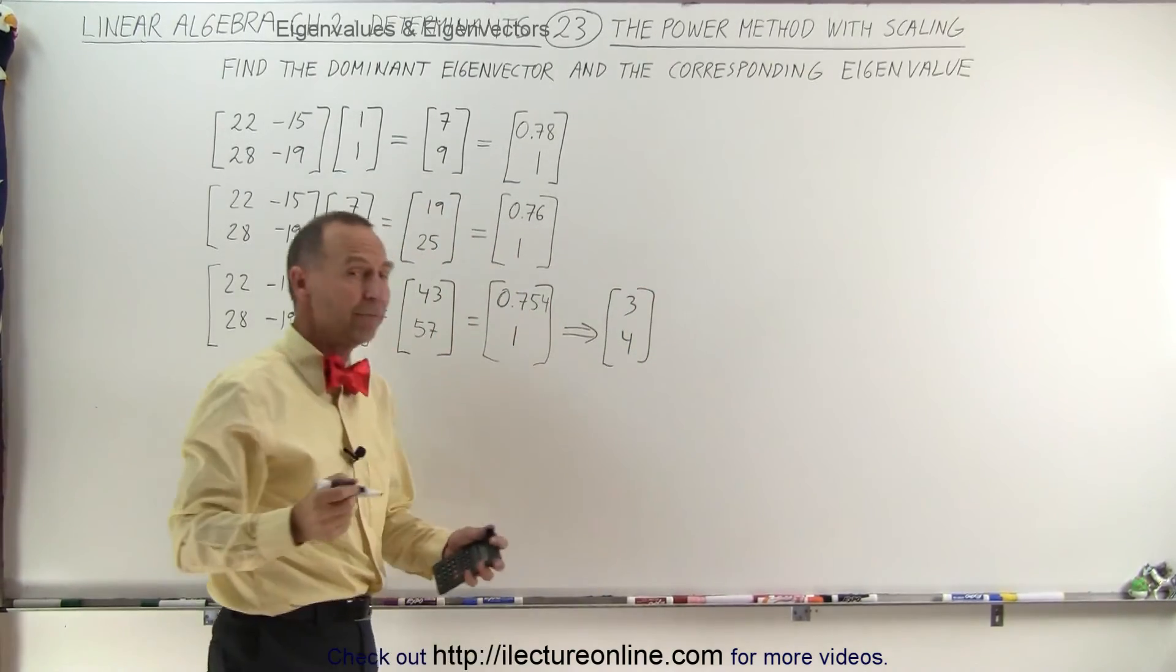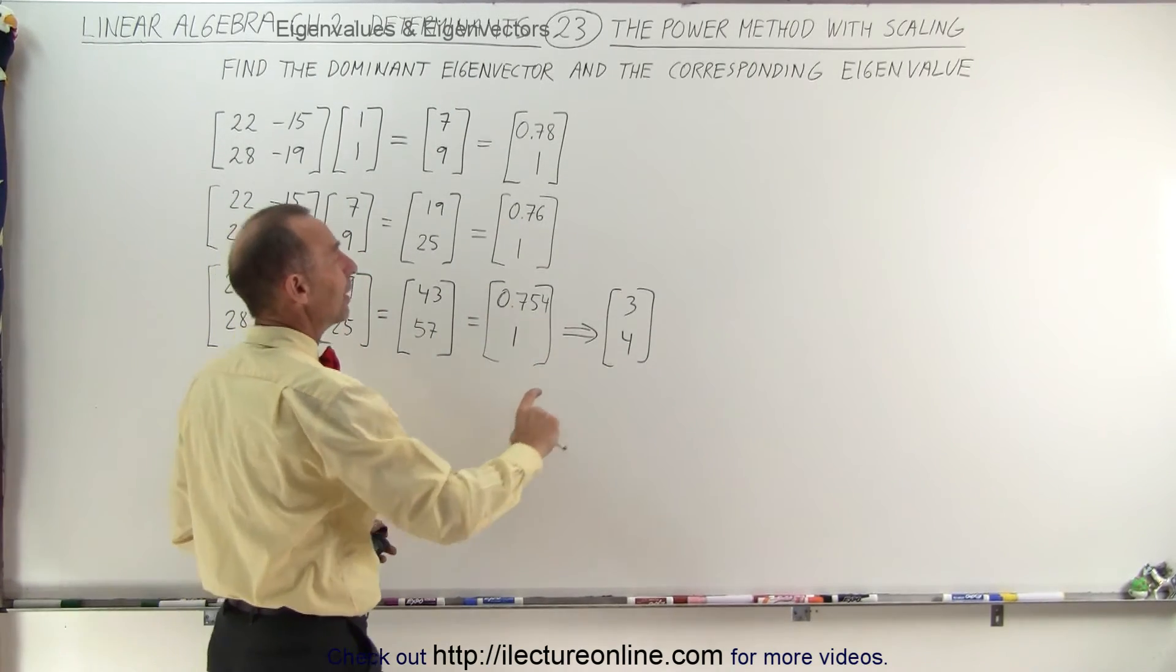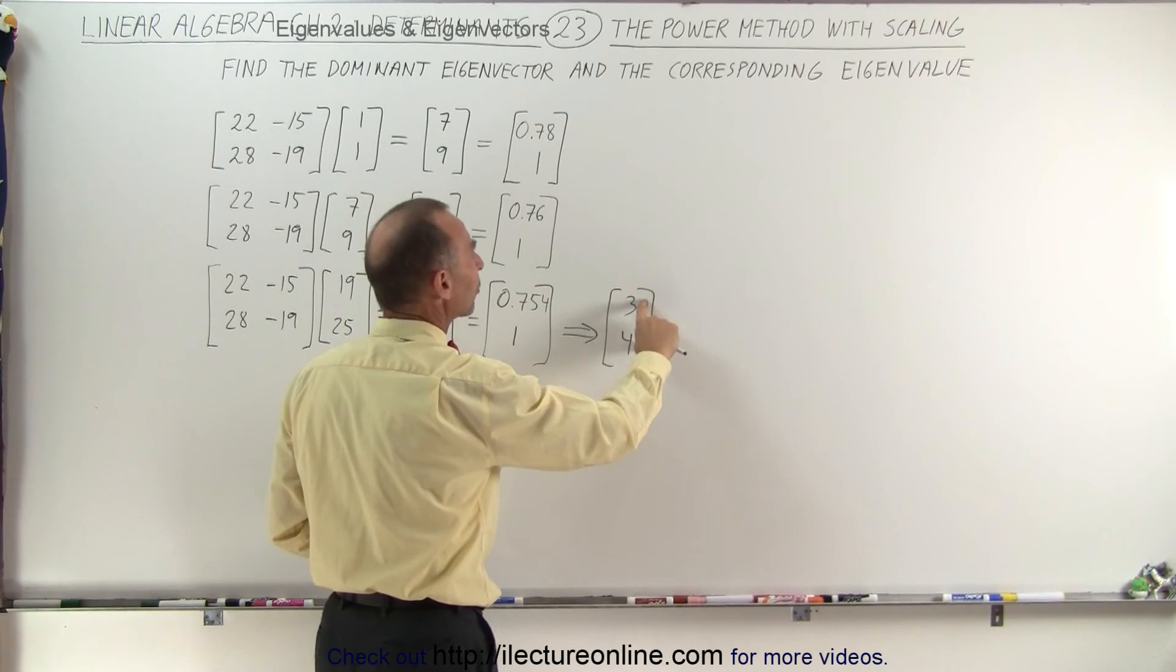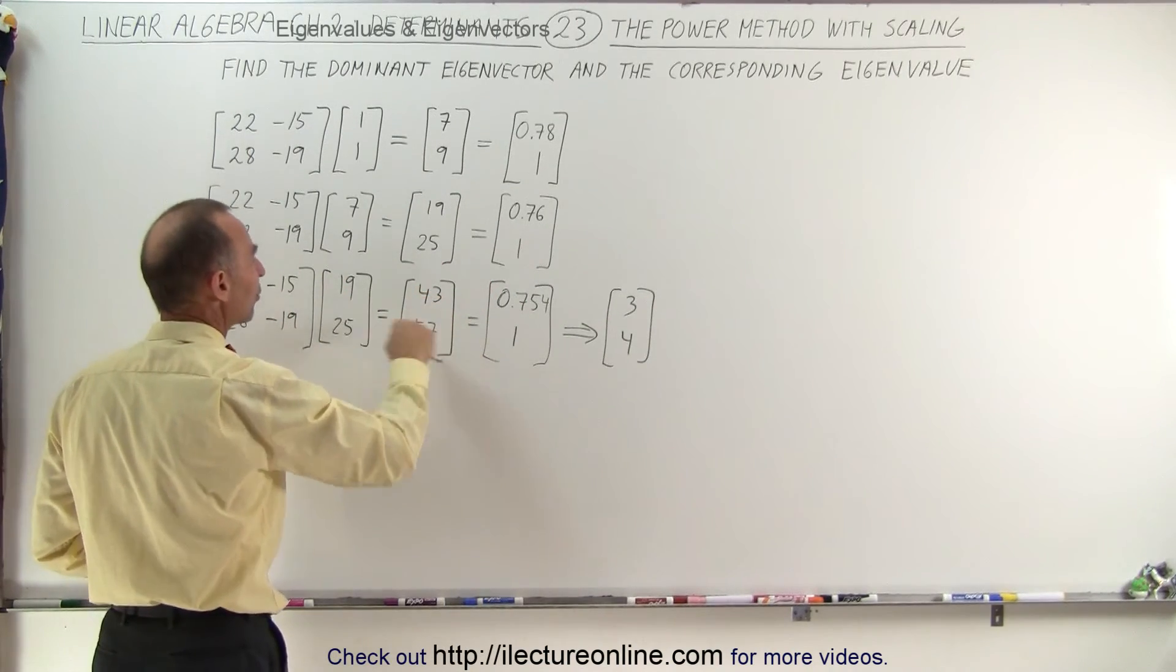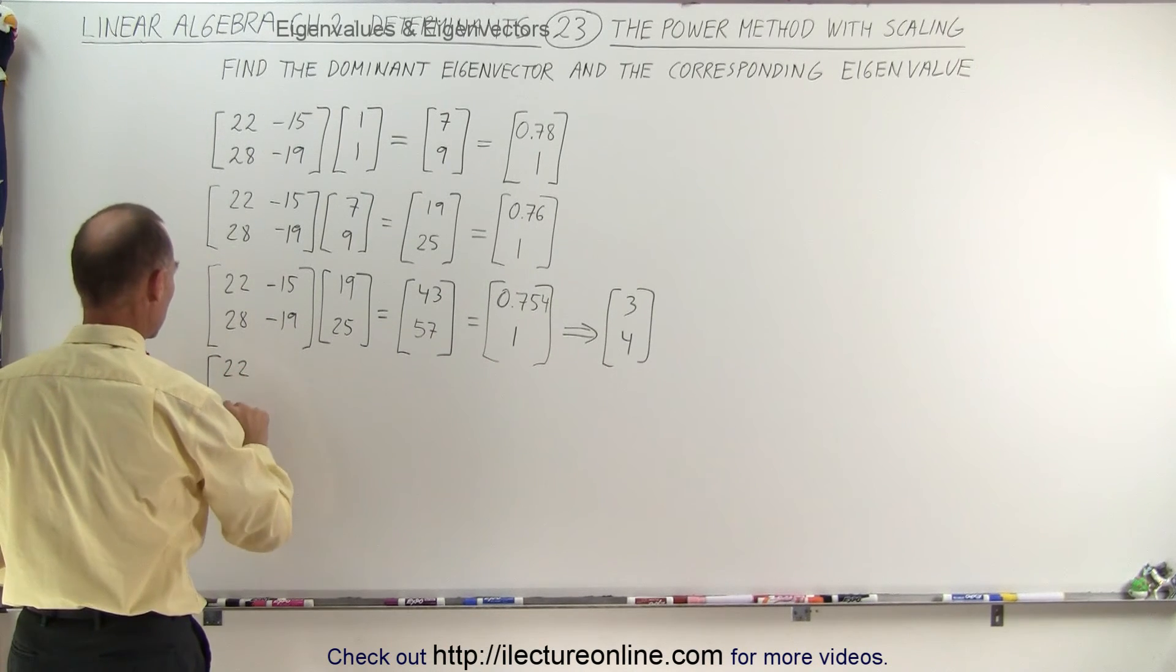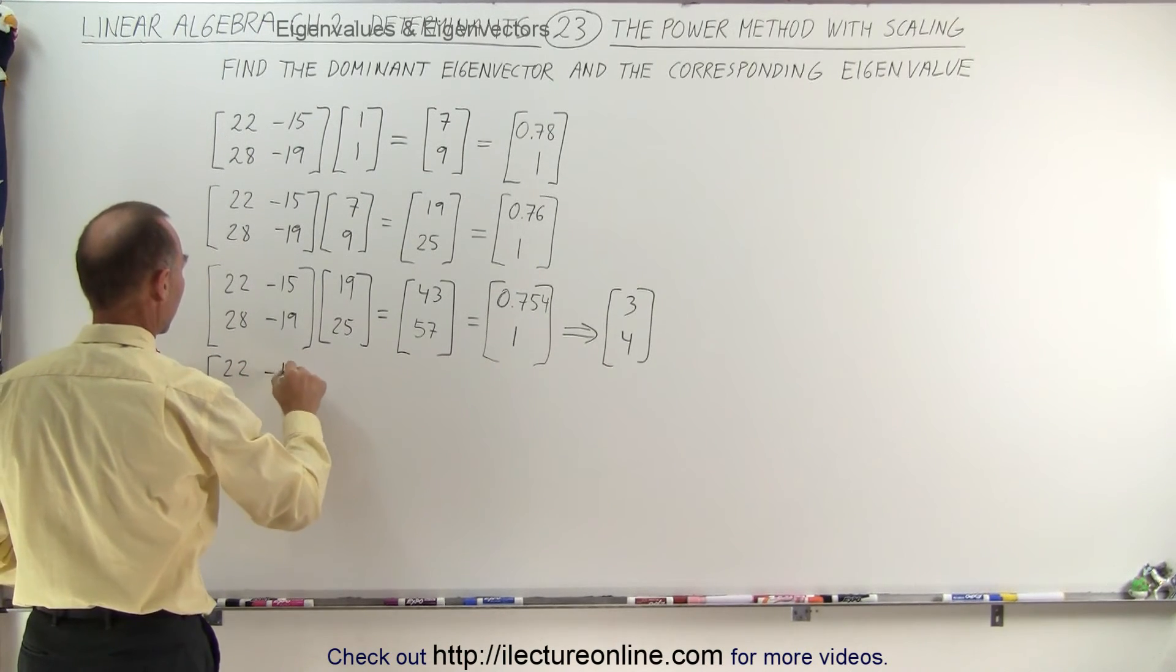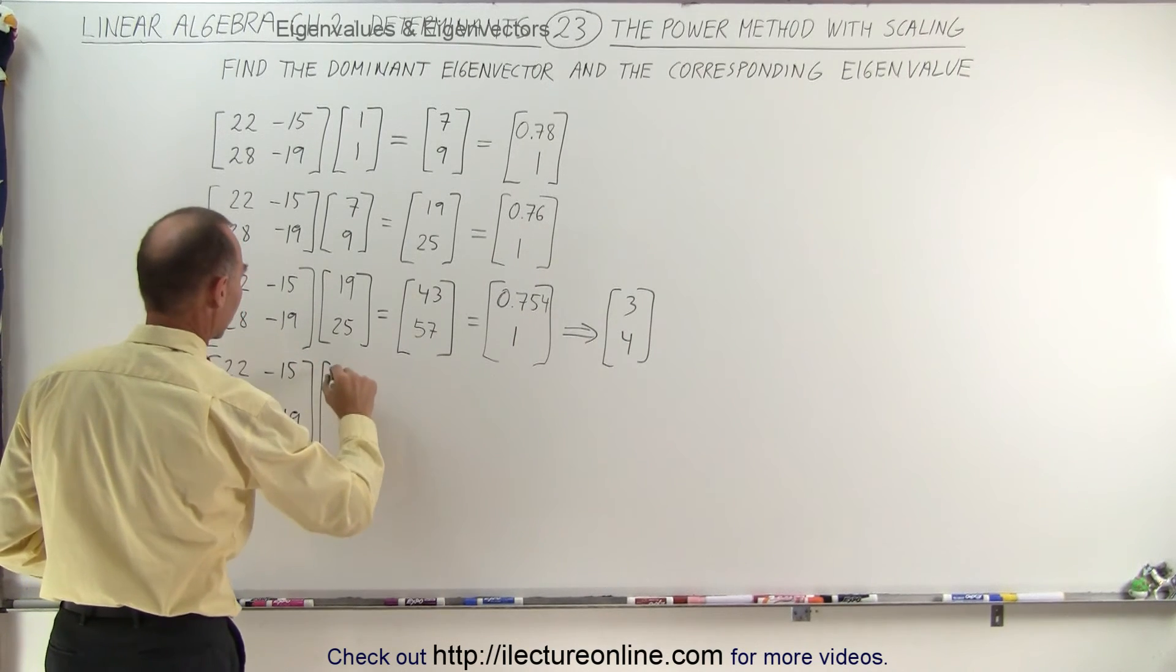And therefore I'm going to go on a limb, not much of a limb because I think I'm correct here in saying that my eigenvector is probably 3 to 4. So let's go ahead and use that instead of the 43, 57 on the next attempt. So we get 22, 28, minus 15, minus 19, and the presumed eigenvector 3 and 4.